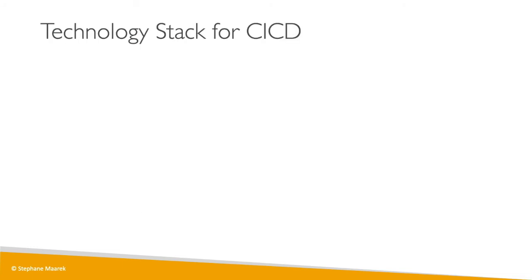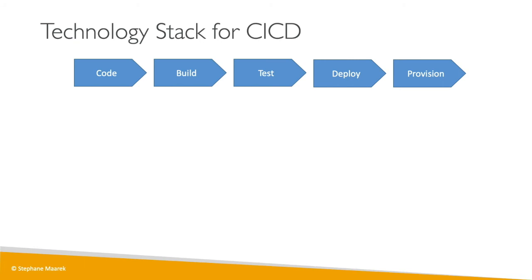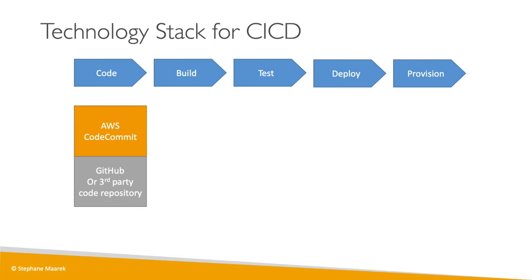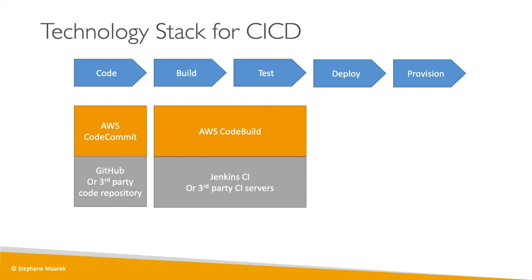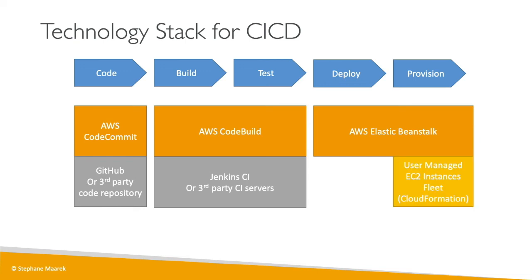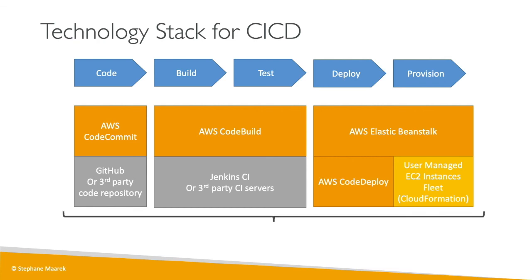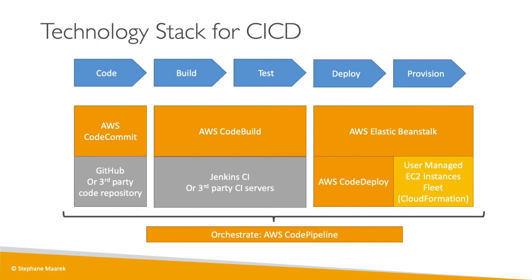Now let's look at the CI/CD stack for AWS. The steps in your CI/CD pipeline are: code, build, test, deploy, and provision. For code, you would use AWS CodeCommit, GitHub, or a third-party repository. For building and testing, you could use AWS CodeBuild, Jenkins CI, or any third-party CI servers. For deploying and provisioning, you can use Elastic Beanstalk, CloudFormation for infrastructure provisioning, and CodeDeploy for deployment specifically. To orchestrate everything, you would use AWS CodePipeline.